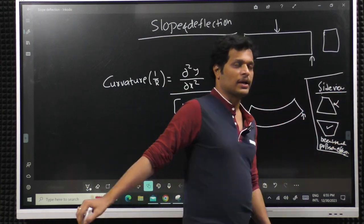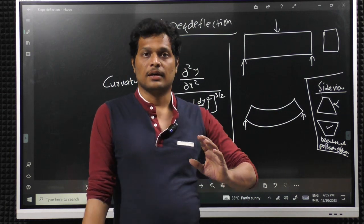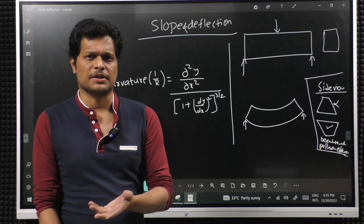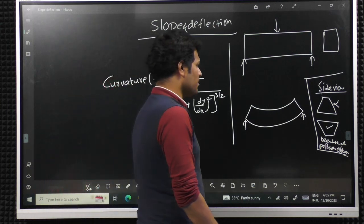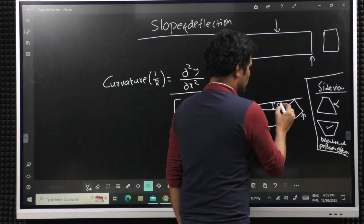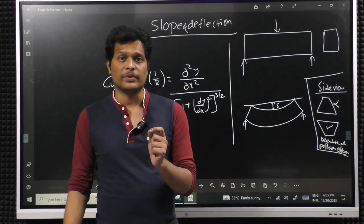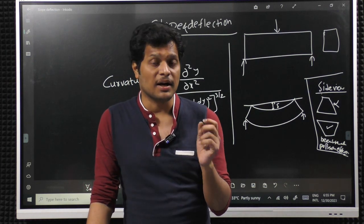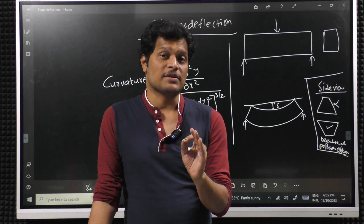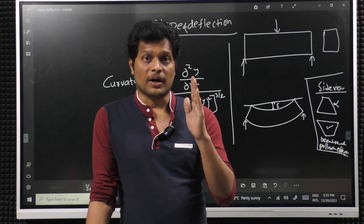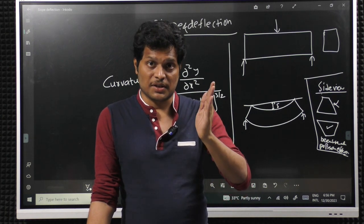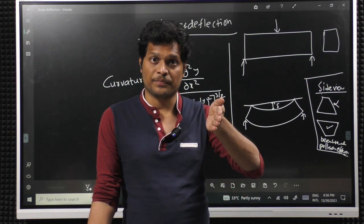In this chapter, what we are exactly finding is deflection and slope. Slope means rotation — rotation of a cross section. In the first chapter I told you there is a difference between deformation and displacement. Even in the torsion chapter, I specifically mentioned that theta is the rotation of the cross section.